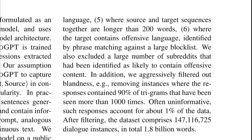Fifth, they remove instances where the source plus target sequence exceeds 200 words, to limit long-term dependencies and prevent the model from suffering from forgetfulness. Sixth, they remove instances where the target contains any offensive language, using a blocklist phrase match. Additionally, they aggressively filter out blandness by removing instances where the response contains 90% of trigrams that have been seen in more than 1,000 places. After all this filtering, they have 147 million dialogue instances totaling 1.8 billion words.